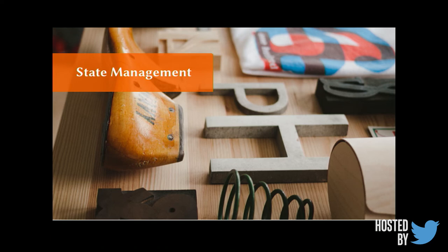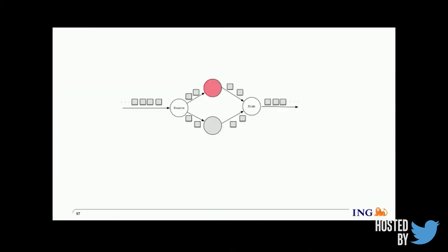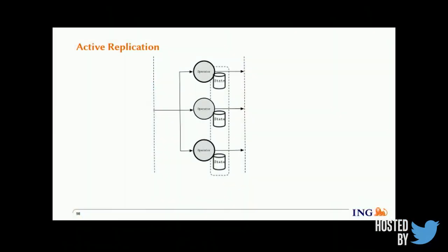The second mechanism for fault tolerance is state management, which deals with the fact that a task can die and the system needs to restore the state it had before the task failed. There are two approaches. The first is active replication — multiple redundant operators process events simultaneously. If one node dies, another can immediately start processing. The drawback is the computational cost of replicating messages to all operators, but the positive side is that fault tolerance and state management become much easier, and recovery is trivial: you simply swap from the failed node to another.